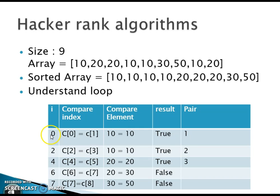When we have not matched a pair, we increment by only one so we do not skip over unmatched socks. Since 20 and 30 did not match, we start from index seven. C of 7 and C of 8 is 30 and 50, which also does not match, so that is also false. Now we have understood the logic and will implement the same thing in Java.